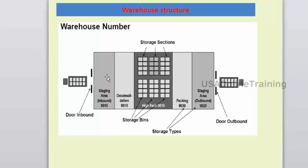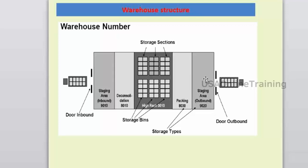Once you've done staging, you keep products in storage sections or bins. For packing, unpacking, or value-added services, a deconsolidation station or work center is used. After the staging area, products move to the work center and then into storage bins — that is the inbound process. For the outbound structure, when there is a sales order or outbound delivery, products are removed from bins, placed in a pack work center, moved to the outbound staging area, then goods issue (GI) is done and products are loaded onto a truck via outbound doors.